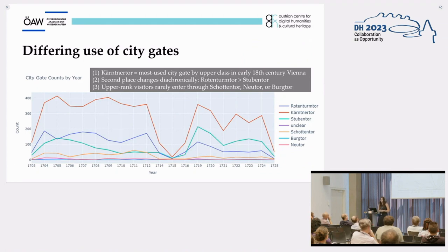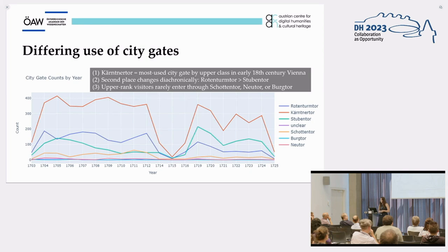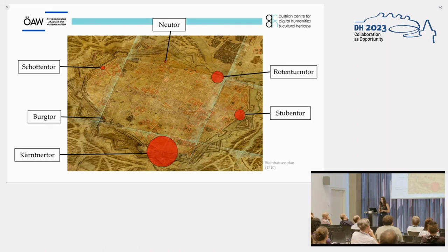When normalizing these spelling variants, we are able to trace the use of different city gates over time, and three tendencies can be identified. The Kärntnertor was used at all times by far the most frequently by upper class persons, possibly because it could for an additional fee be crossed during the night. The gate with the second most entries changes over time: at the beginning it is the Rotenturmtor, located next to the Danube, and then towards 1719 this position is overtaken by the relatively close Stubentor. In contrast, Schottentor, Neutor, and Burgtor were only rarely used. Visualized on the Steinhausenplan — a map of Vienna from 1710 — upper class visitors used the gates in the southeast much more often than those in the northwest.